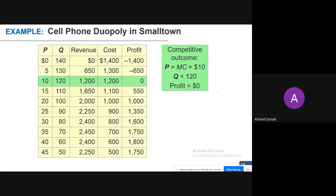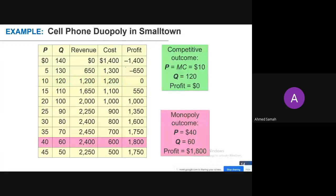The competitive outcome has firms producing where price equals marginal cost — that is, where P = MC — which occurs at quantity 120 with a price of 10. In a monopoly, the firm charges the quantity with the highest profit, selling a much lower quantity at a much higher price compared to a perfectly competitive market.